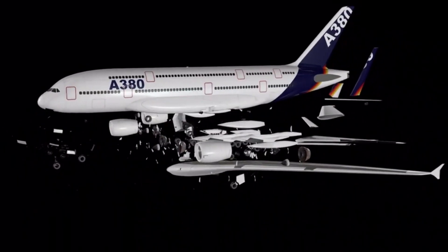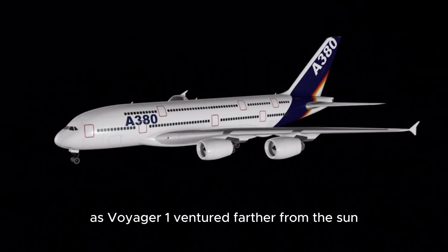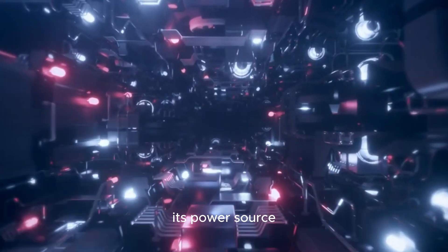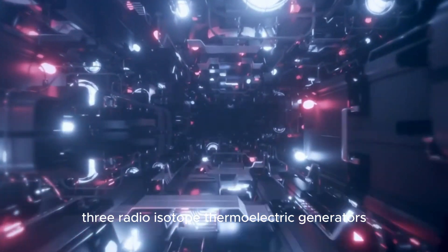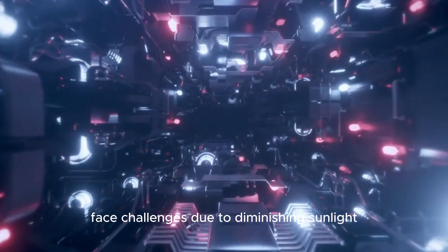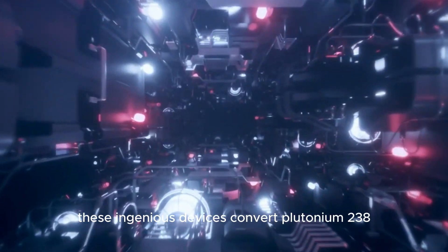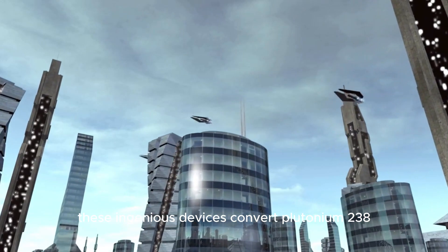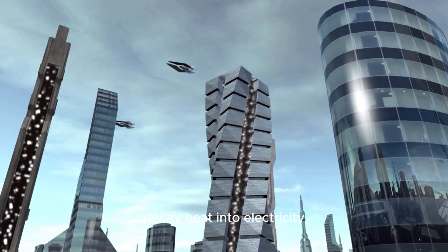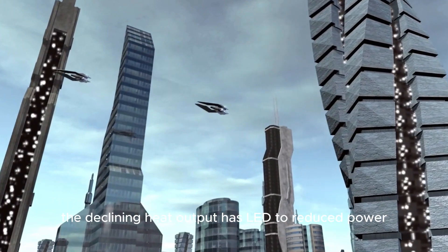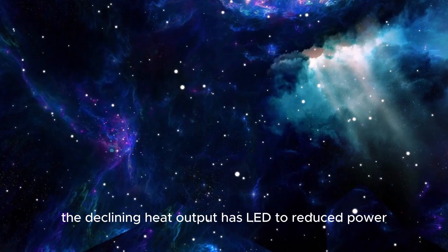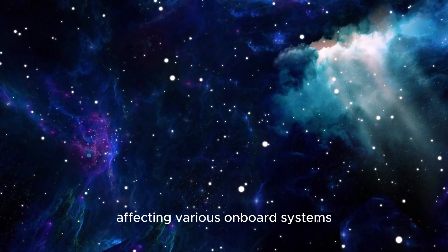However, this accomplishment was far from easy. As Voyager 1 ventured farther from the sun, its power source, three radioisotope thermoelectric generators, faced challenges due to diminishing sunlight. These ingenious devices convert plutonium-238 decay heat into electricity. The declining heat output has led to reduced power, affecting various onboard systems.